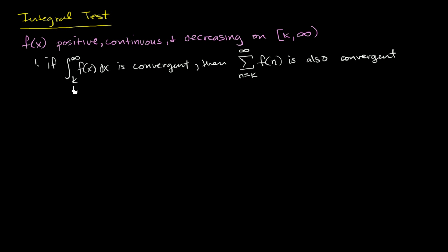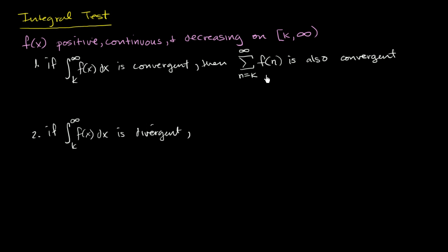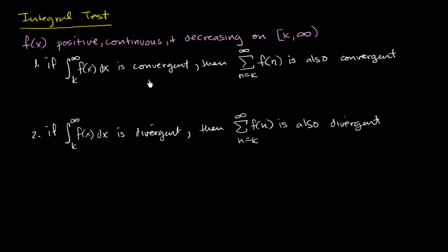The second deduction we might be able to make using the integral test is if it goes the other way around: if the improper integral from k to infinity of f of x dx is divergent, then the same thing is true for the corresponding infinite series — it is also divergent.